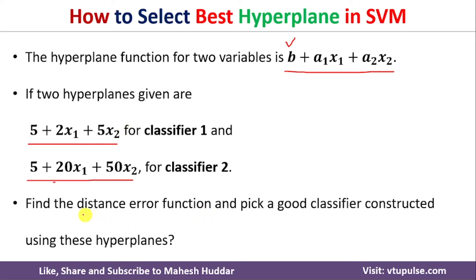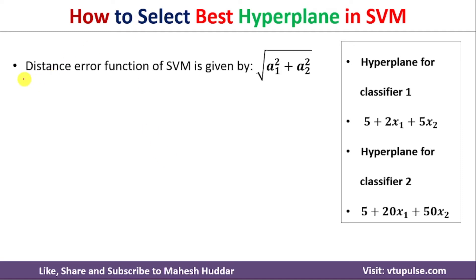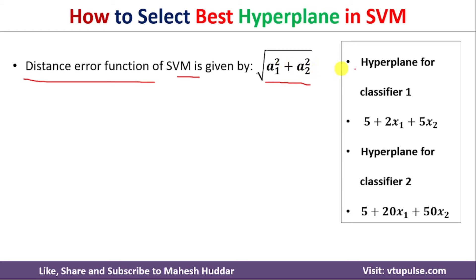For that reason, first we need to calculate the distance error, and based on this particular distance error we need to select one of these hyperplanes. The distance error function in SVM looks something like this: square root of a1 squared plus a2 squared. In this case, we are not going to consider the intercept — we consider only the coefficients of the variables. Here we have two variables x1 and x2, where a1 is the coefficient of x1 and a2 is the coefficient of x2. If you have one more variable, this becomes square root of a1 squared plus a2 squared plus a3 squared, and so on.